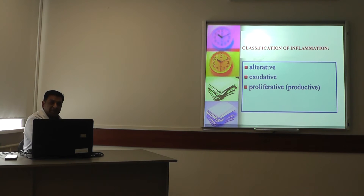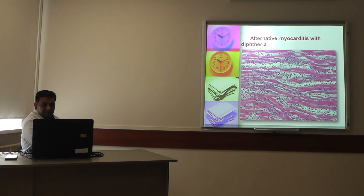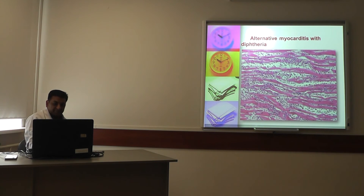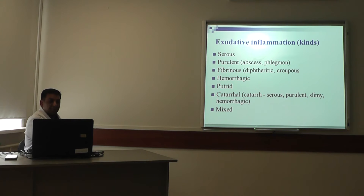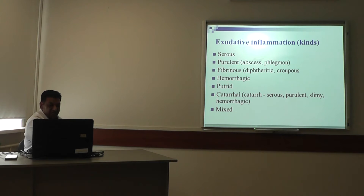The classic equation of inflammation includes three types: alteration, exudation, and proliferation (also called productive). An example of alteration is myocarditis with diphtheria. For exudative inflammation, there are many kinds: serous, purulent (including abscess and phlegmon), fibrinous, diphtheritic, hemorrhagic, putrid, catarrhal, serous-purulent, slimy-hemorrhagic, and mixed.